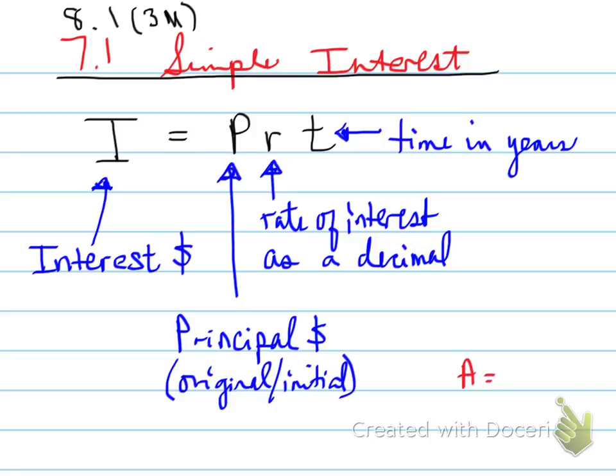All right, now, the other formula that's important, that's used in all the other units, is the A equals P plus I. A equals P plus I has to do with the amount equals the principal plus the interest. So the future amount, the future value, the later amount,